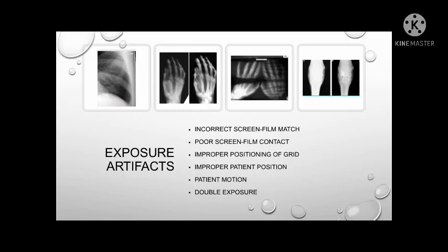Another type of exposure artifact is poor screen film contact. It will appear as smoothness in an area that may obscure some details on the radiograph. It can be checked through a wire mesh test where we expose the wire mesh on top of the cassette. Proper screen film contact produces a high definition image in which all lines of the wire mesh are visible. Without proper contact, the resulting image will show smoothness in certain areas. A warped cassette from heavy objects placed over it will also show smoothness on the affected part.